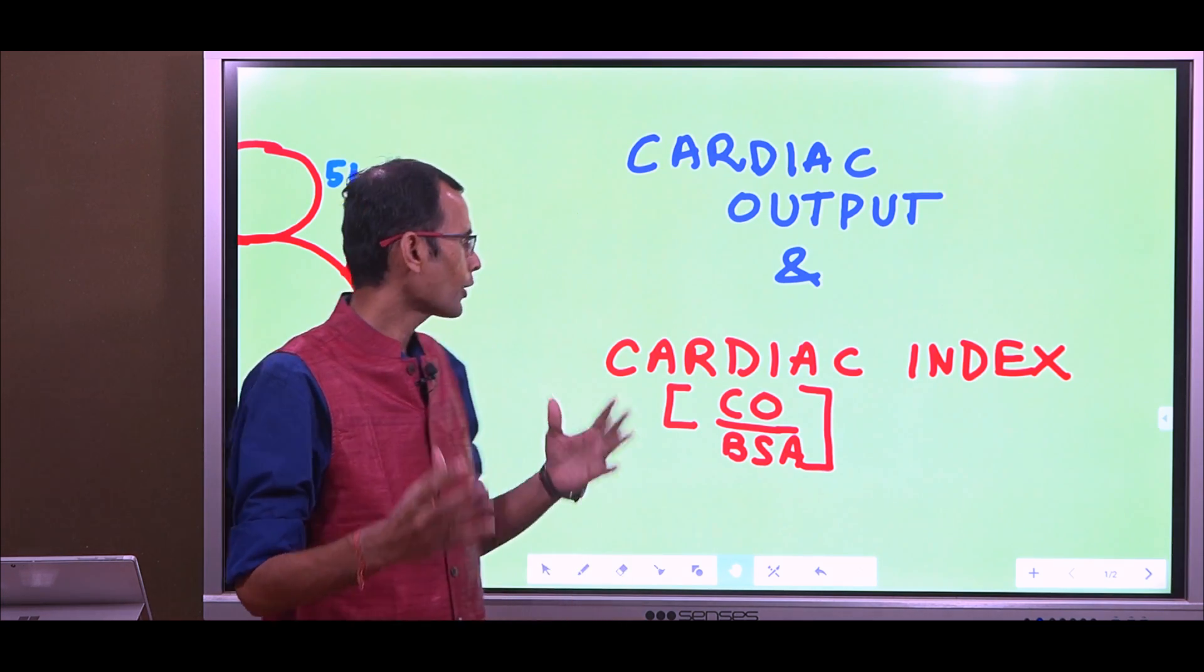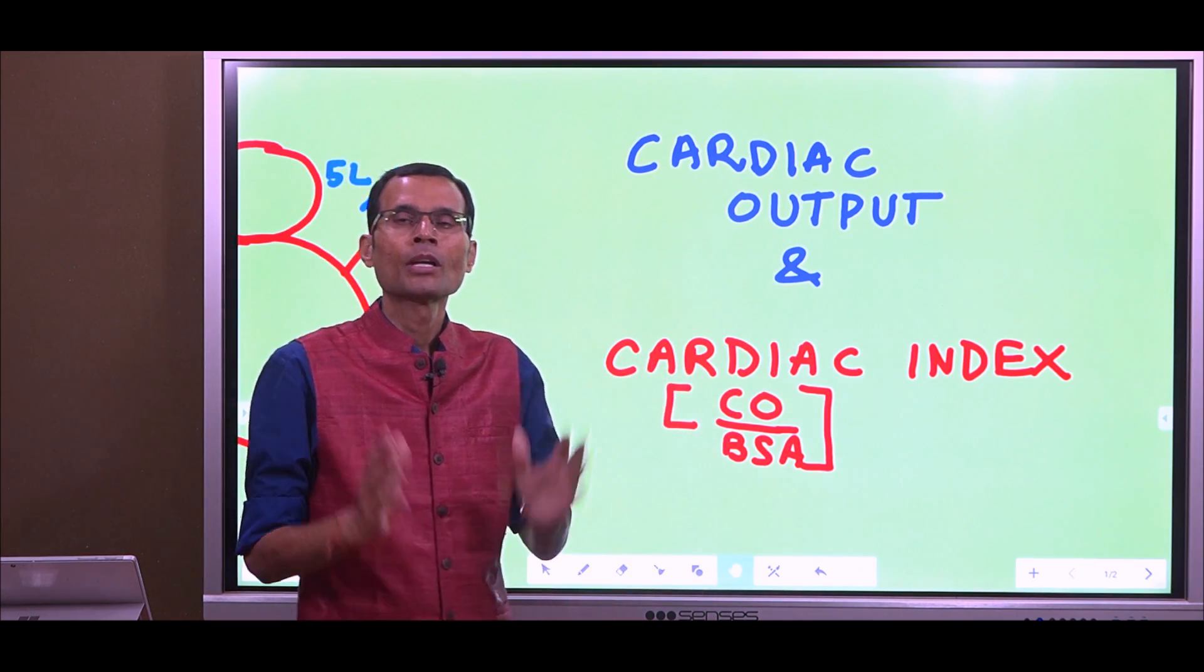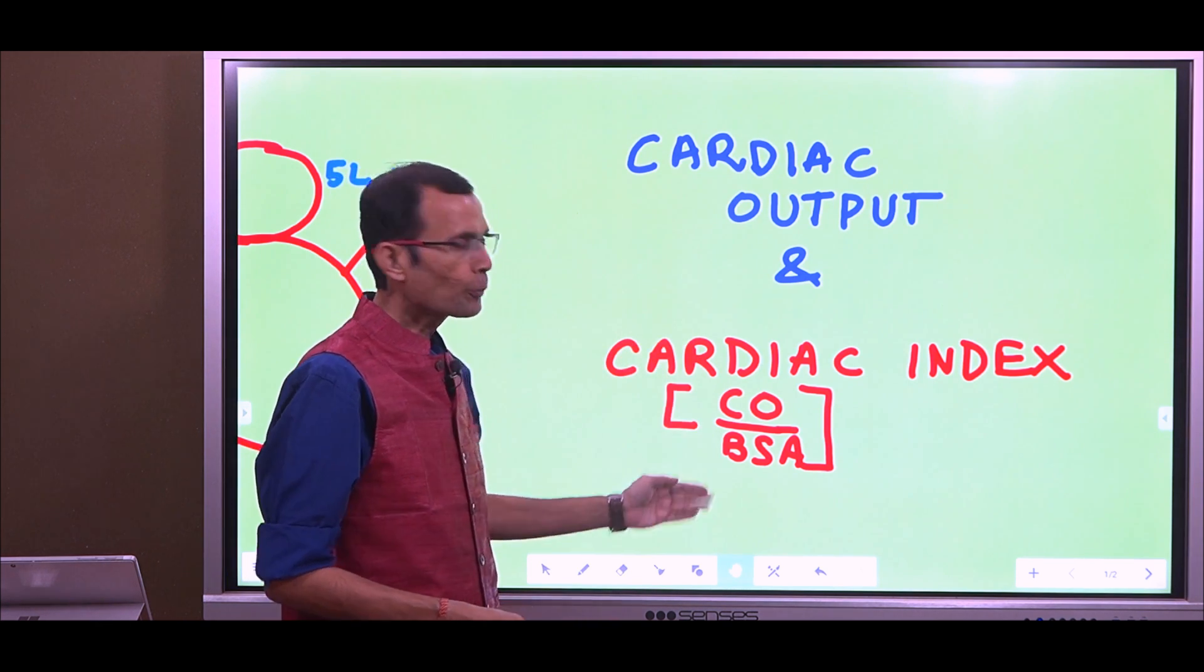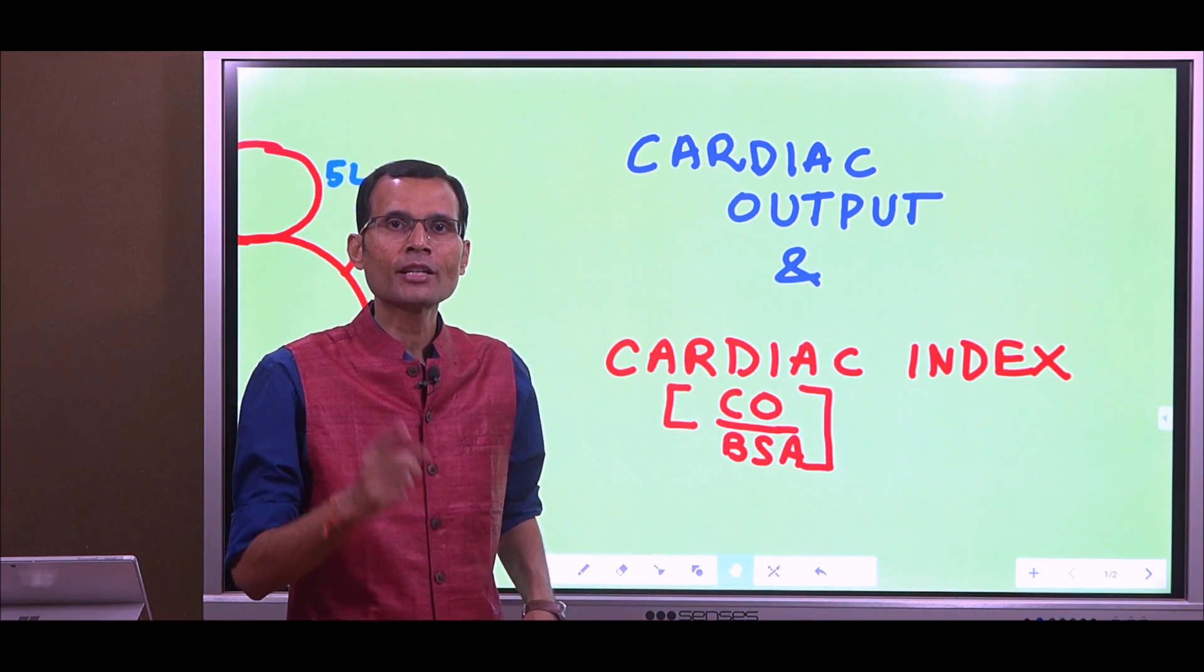If we are already aware of this fact, then what is the need of knowing cardiac index? Cardiac index is cardiac output per meter square of body surface area.